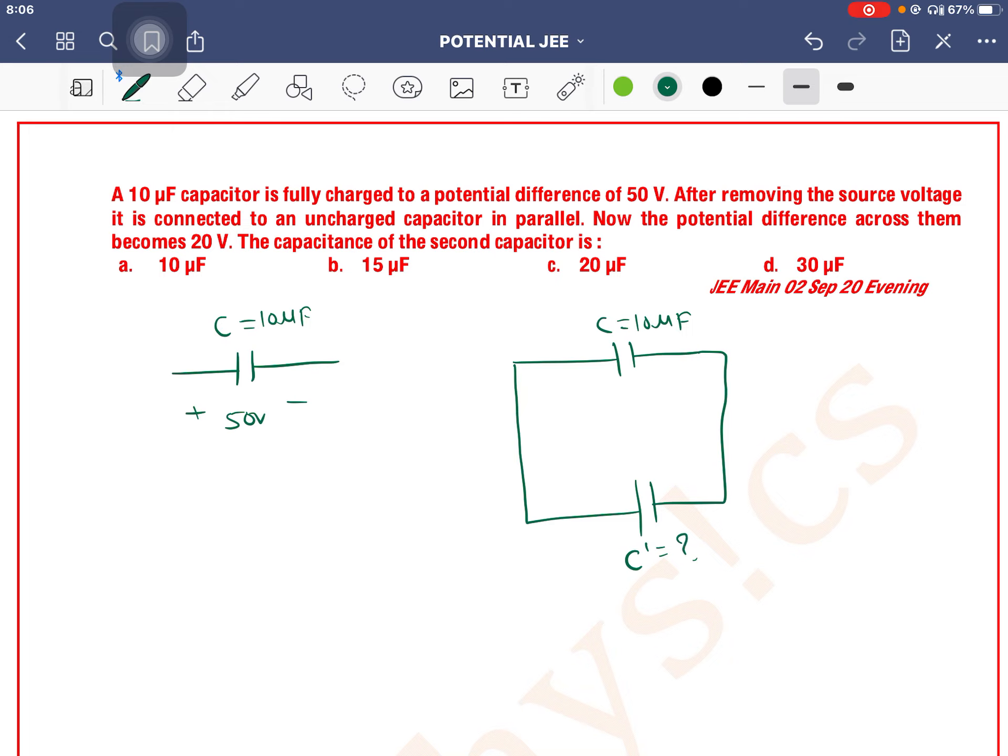Now the potential difference across them becomes 20 volts. Initially, the potential difference across C is 50 volts and across C' is 0 volts. Finally, the potential difference across them is 20 volts.